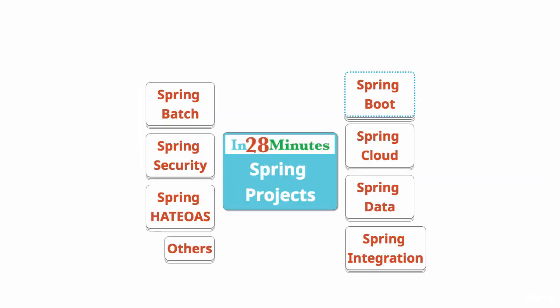In the last step we looked at different spring modules. All the spring modules have the same release version as the spring framework, so they are almost like they are part of the spring framework. There are other things spring does other than the spring framework and its modules. These are called spring projects. These spring projects provide solutions for different problems faced by enterprise applications. In this video let's look at a few of them.